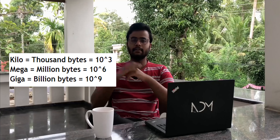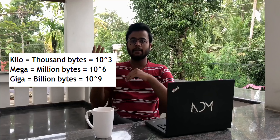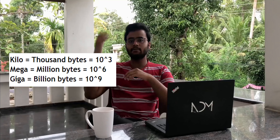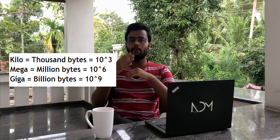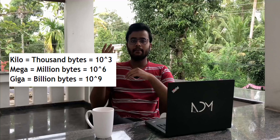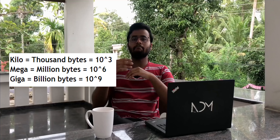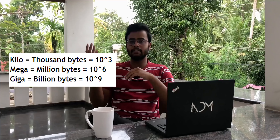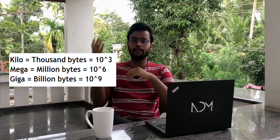In the decimal number system, we use base 10. So 1 kilobyte is 10 to the power of 3, which is 1000 bytes. 1 megabyte is 10 to the power of 6, which is one million bytes. And 1 gigabyte is 10 to the power of 9, which is one billion bytes.